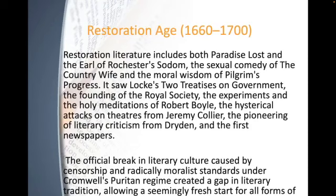Moving into the Restoration age, around 1660 to 1700, Restoration literature includes Paradise Lost, the Earl of Rochester's Sodom, the sexual comedy The Country Wife, and the moral wisdom of Pilgrim's Progress. This age also saw Locke's two treatises on government, the founding of the Royal Society, the experiments and holy meditations of Robert Boyle, the attacks on theaters from Jeremy Collier, and pioneering literary criticism from Dryden, as well as the first major newspapers.